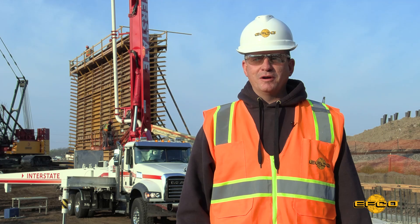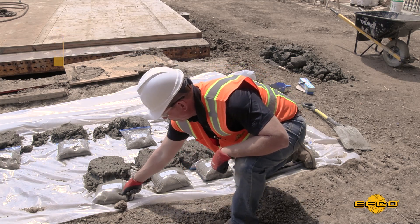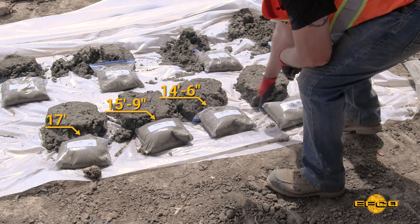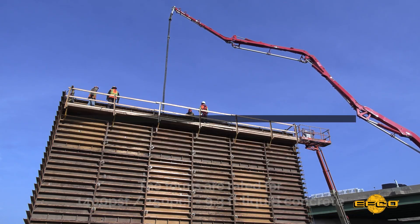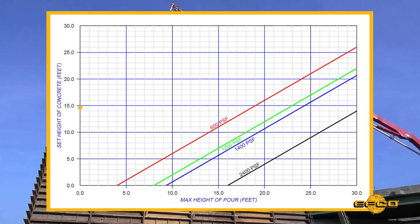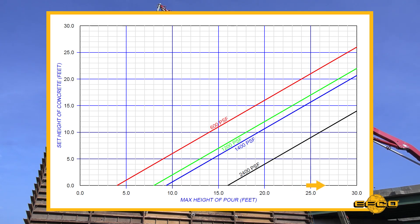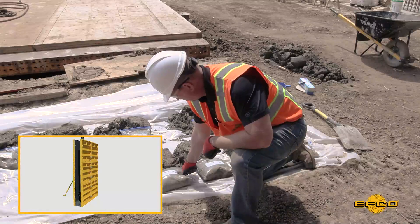Pile 12 is 40 minutes old and is not set up yet — I can push my thumb in about two inches. Pile 13 is not set up at all. Pile number 11 has set up and equates to 14 foot 6 inches of concrete in the wall, indicating that 14 foot 6 inches of concrete has set up. For this project, the forms are rated for 1,400 psf, which means they can hold 9.3 feet of liquid concrete. Now we go to the set chart, find 14 foot 6 inches on the left, follow the chart over to 1,400 psf, and then go down. We can see that the maximum height of concrete in the form should not exceed 24 feet. If there is more than 24 feet, the chart indicates we've exceeded the allowable pour pressure and need to slow down the pour. If there is less than 24 feet, the chart indicates we can continue pouring without exceeding the allowable pour pressure.